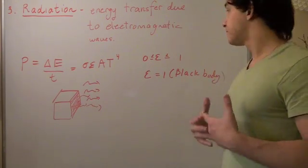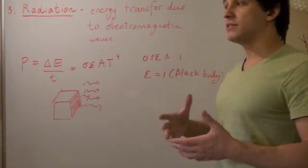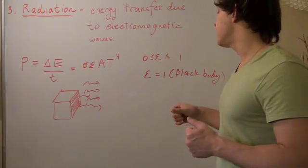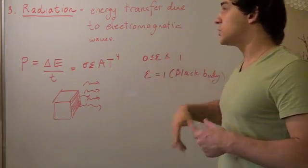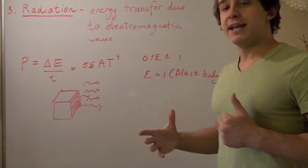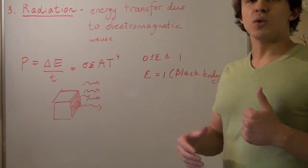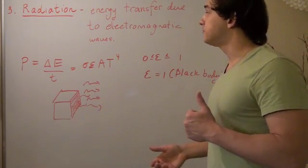And a value of zero simply means that it reflects all the radiation. It does not absorb any radiation, so it does not release any radiation.